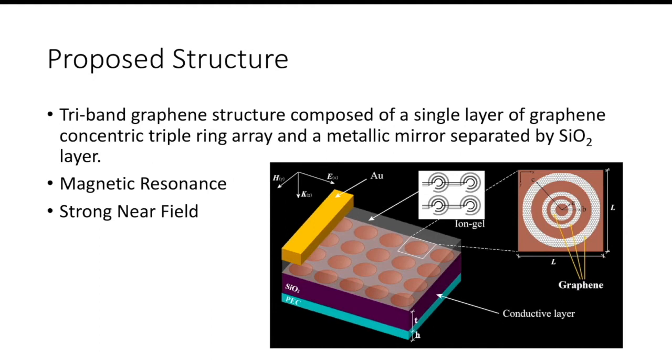The structure works by sandwiching an insulator between two metallic layers to use the magnetic resonance that results between the top and bottom metallic layers, the graphene-based MPA.